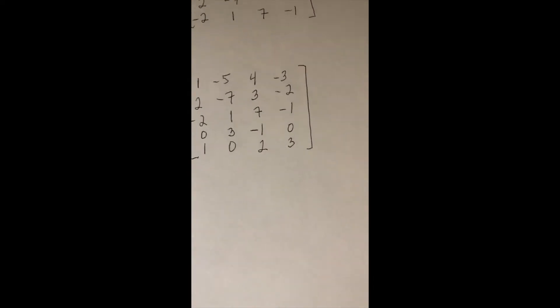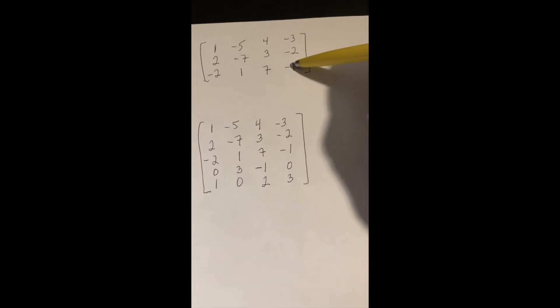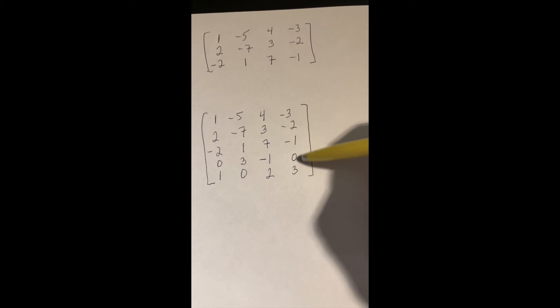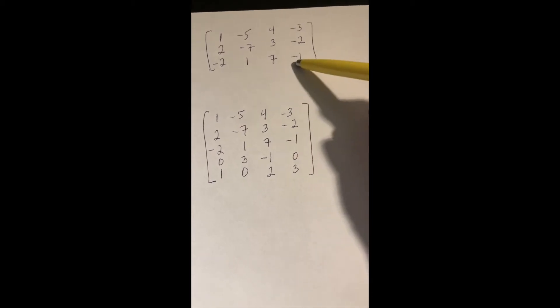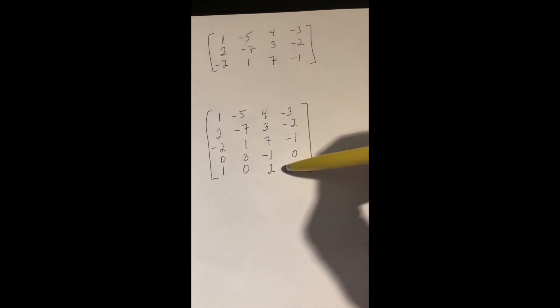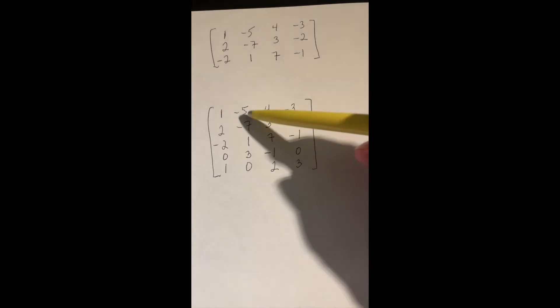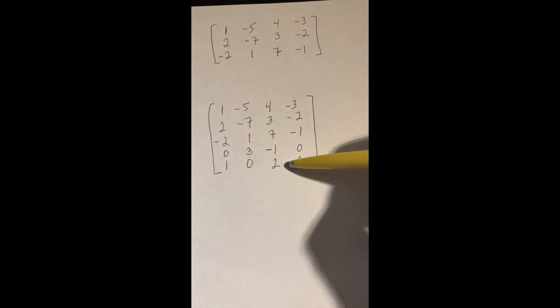I want to do another quick example. I'm going to take this same matrix and I added a couple rows. So this was a 3x4, this one's going to be a 5x4. Five rows here and four columns.